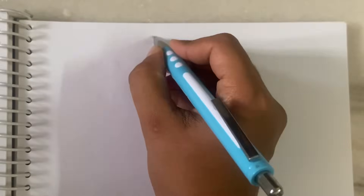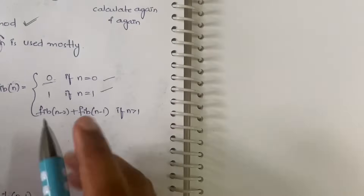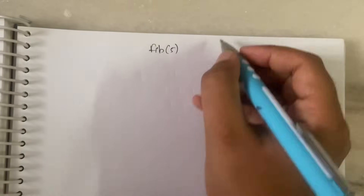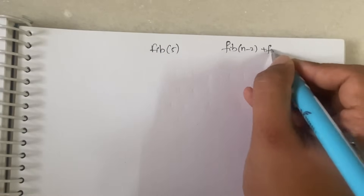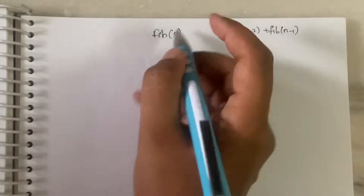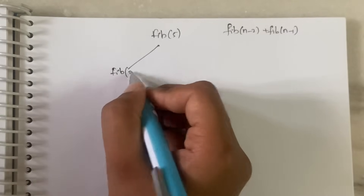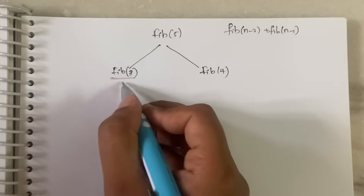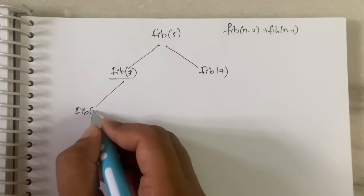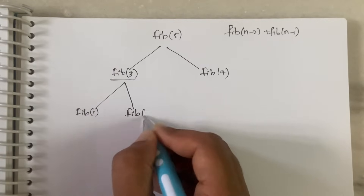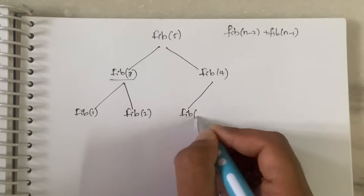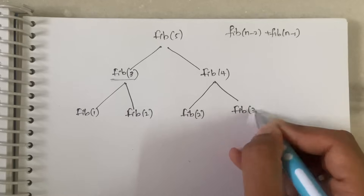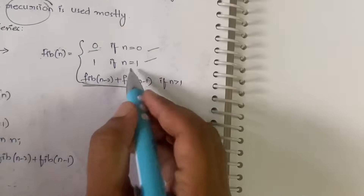Let's trace fib(5). Since n is greater than 1, we apply fib(n-2) + fib(n-1), giving fib(3) + fib(4). Breaking fib(3): fib(1) + fib(2). Breaking fib(4): fib(2) + fib(3). Now fib(1) is known — it is 1. But fib(2) is unknown, so we break it into fib(0) + fib(1).